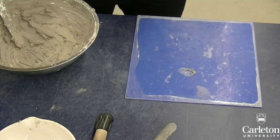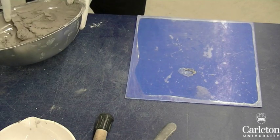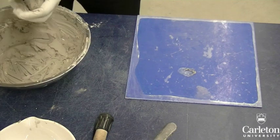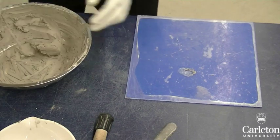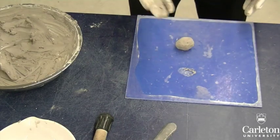To determine the plastic limit of the sample, we will need a flat surface such as this glass pane. Take a small lump of the sample like this and roll it into an ellipsoidal shape. Place this on the flat surface and start rolling it back and forth like this.